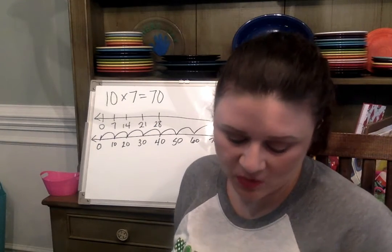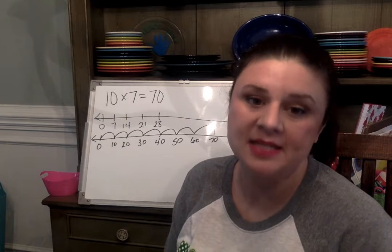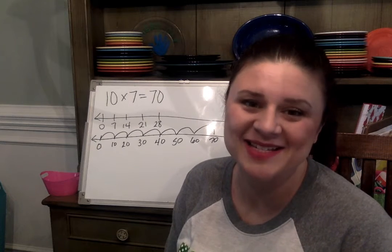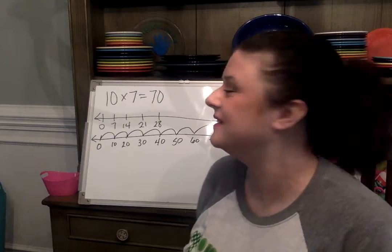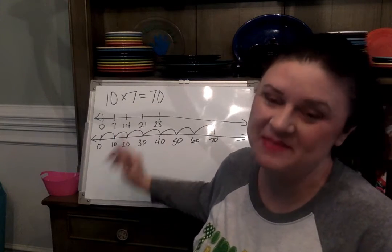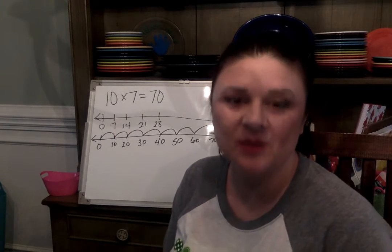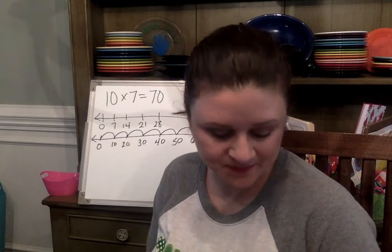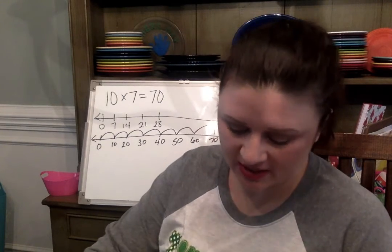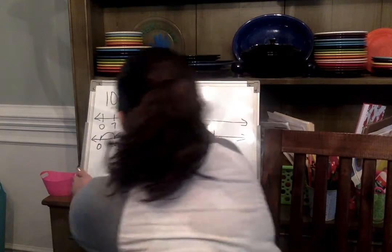It would make more sense to say 10 seven times than to say 7 ten times. But we know the power of 10 — that would make 7 become 70. Let's look at another equation, and hopefully the power of 10 can help us solve this one.